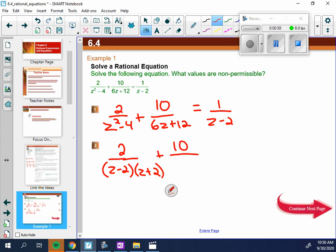Factor this one. What's the greatest common factor of that second denominator? 6, and you would have left a z plus 2. And then this one's already factored, a z minus 2.